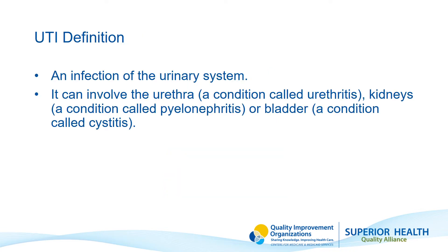A UTI is an infection of the urinary system. It can involve the urethra, a condition called urethritis; the kidneys, a condition called pyelonephritis; or the bladder, a condition called cystitis.